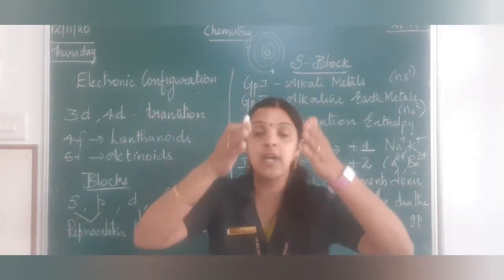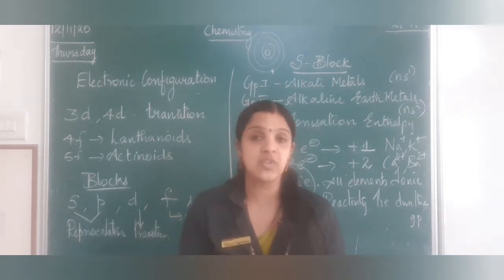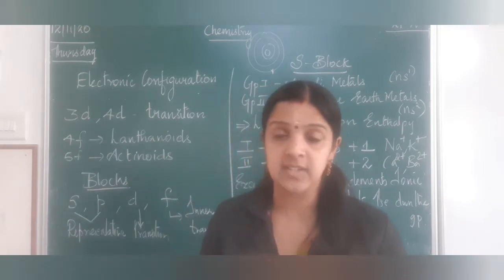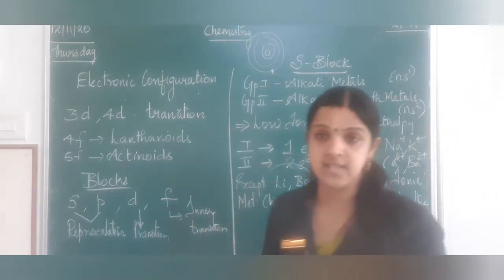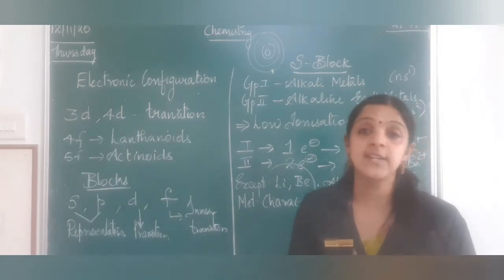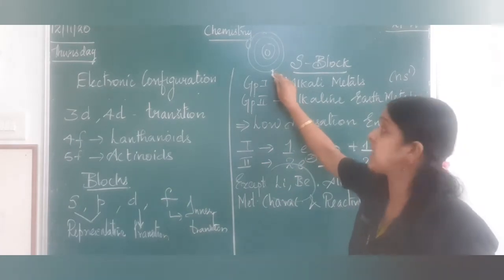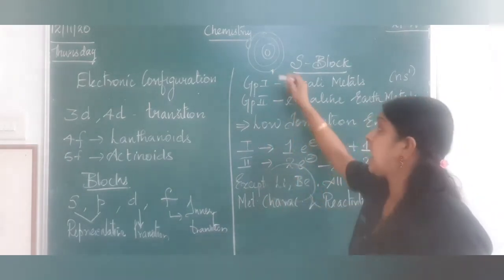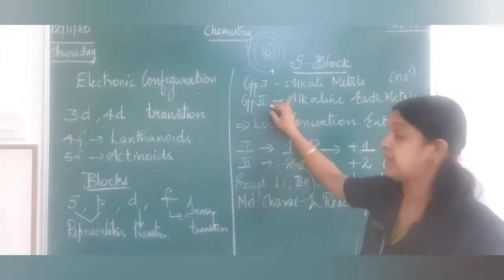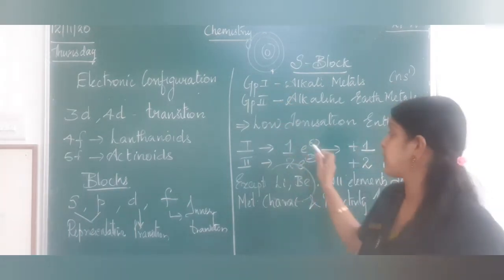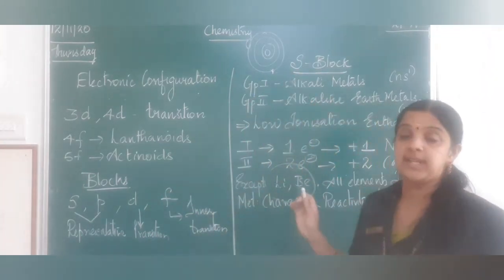Except lithium and beryllium, all S block elements are ionic in nature. Their metallic character and reactivity increase going down the group. Reactivity increases because the element can lose an electron easily. Group 1 and Group 2 elements definitely lose electrons to become +1 and +2 oxidation states. This is the overview of S block elements.